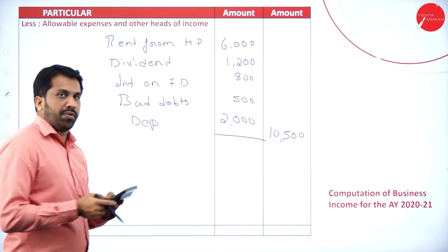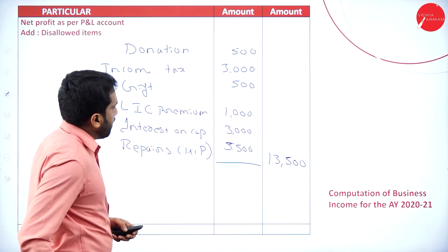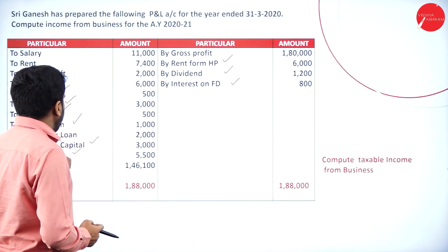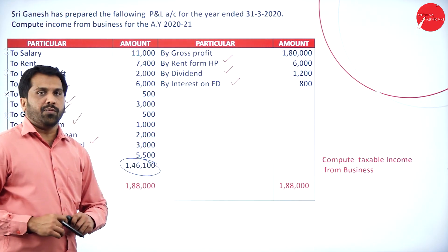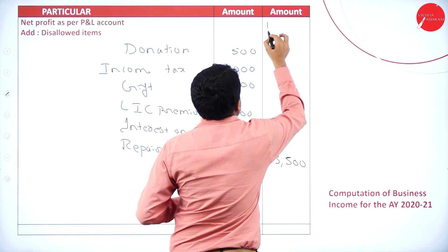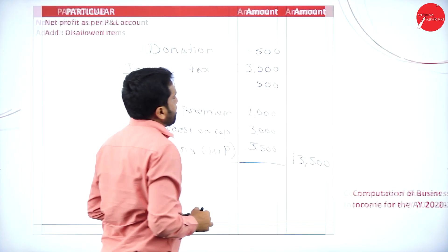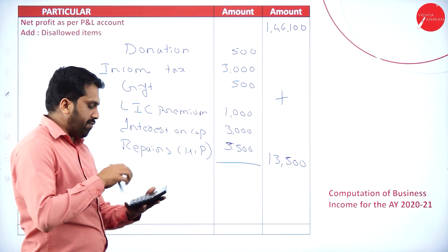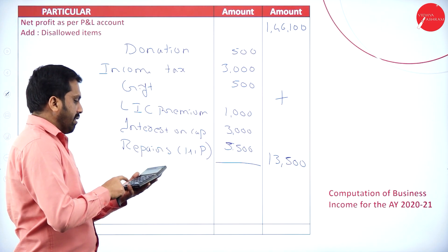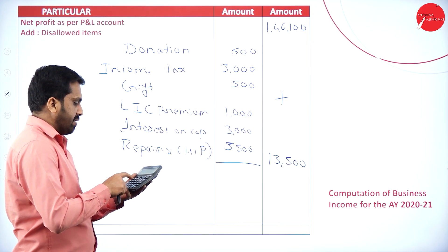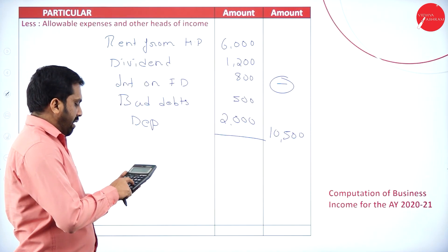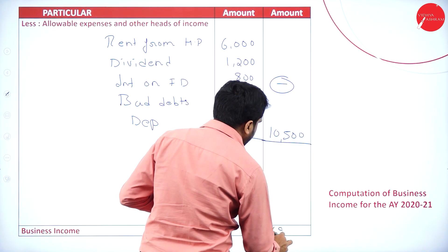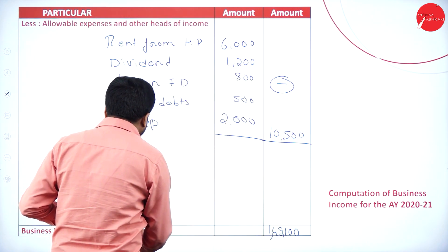So 10,500 is our total to deduct. Before finalizing, we write the net profit: 1,46,100. Now the computation is: net profit 1,46,100, plus disallowed items 13,500, minus 10,500 (allowed expenses and other head incomes). I got 1,49,100. So 1,49,100 is your business income.